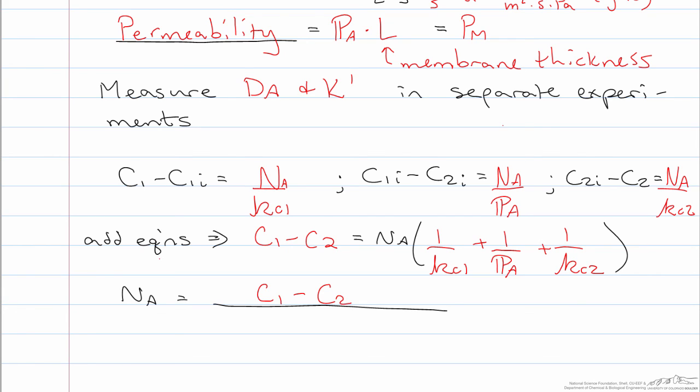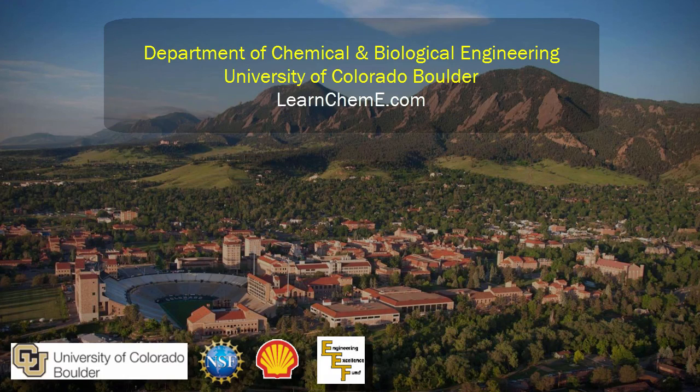That shows the overall driving force of C1 minus C2, the concentration difference of the component in the liquid on the feed side minus that in the permeate side, divided by 1 over KC1 plus 1 over the permeance plus 1 over KC2.